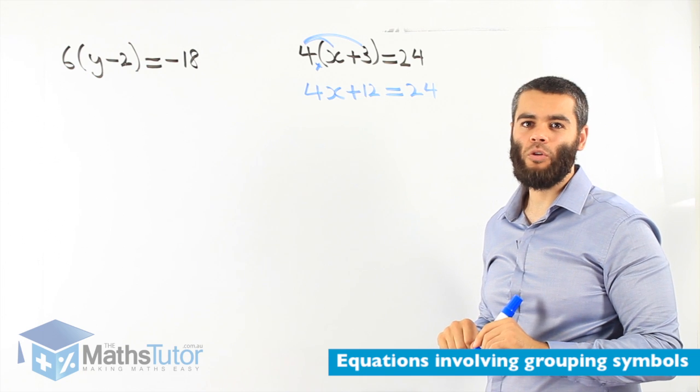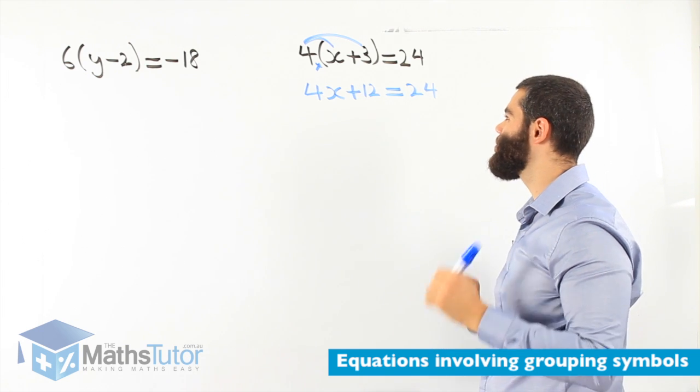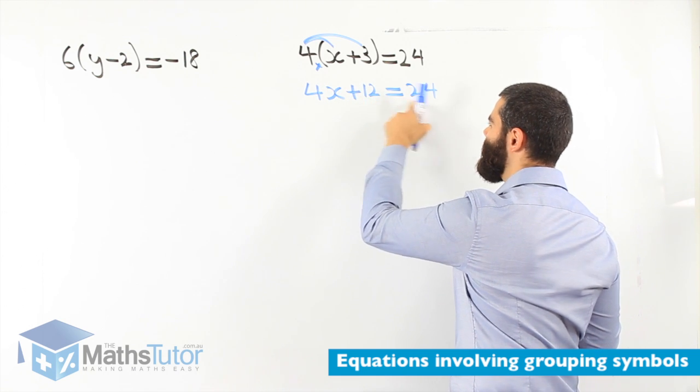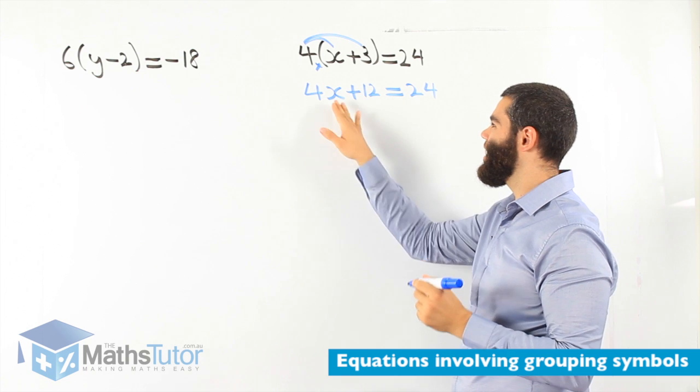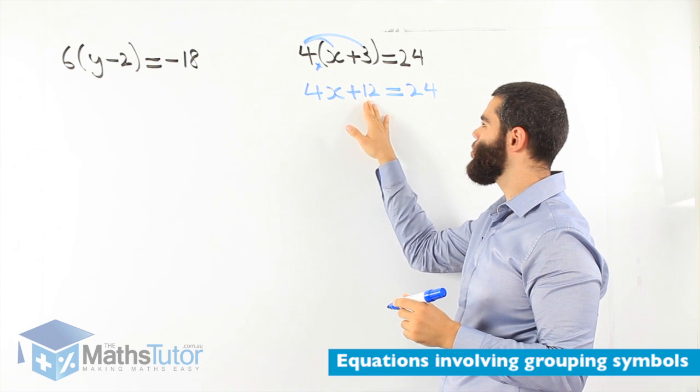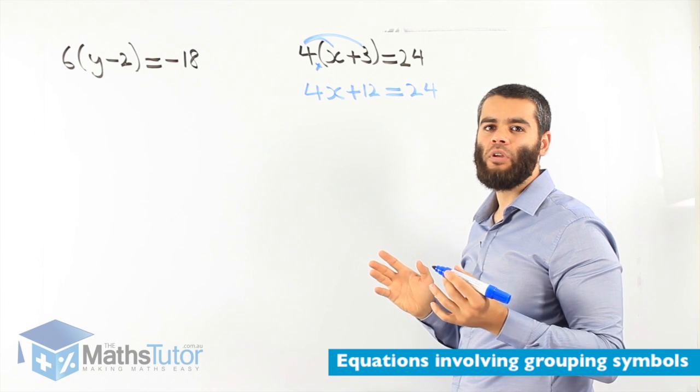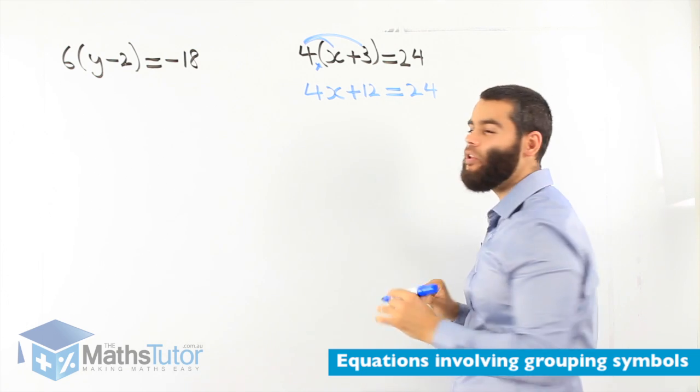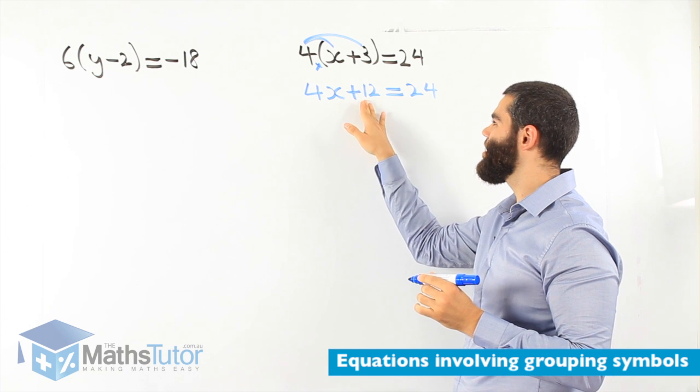We have our normal equation. Now, simple. What do we do? We have 4x plus 12 equals to 24. We want to work out x. We have to get rid of the 12, we have to get rid of the 4. Which one do we get rid of first? We start with the furthest one away from x. It's the 12.